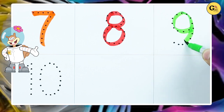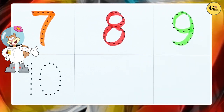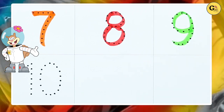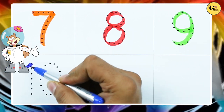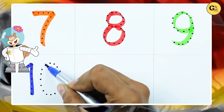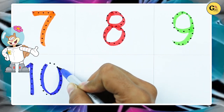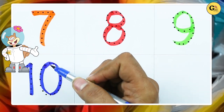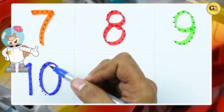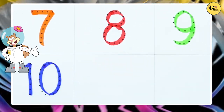It's number 9. Number 10 — 1 and 0 — it's number 10 with blue color. Thank you for watching, please subscribe!